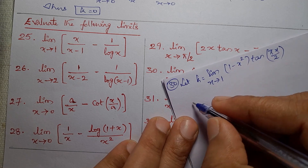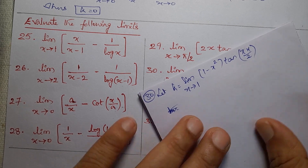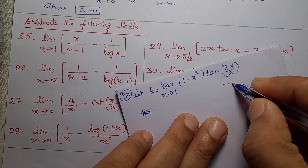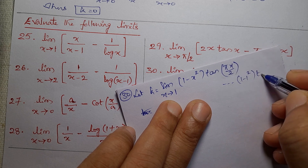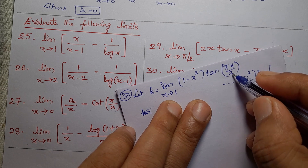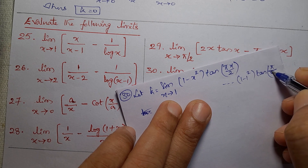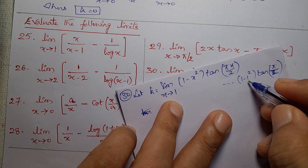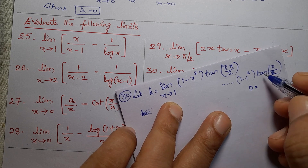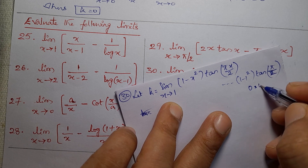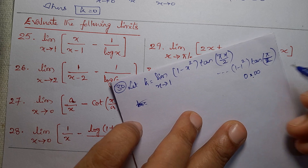So K equals the direct substitution at x=1: 1 minus 1 squared gives 0, and tan(π/2 · 1) is tan(90°) which is infinity. So this is a 0 times infinity indeterminate form — Type 1.